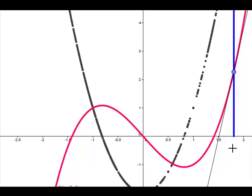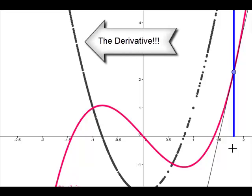This is what we mean when we say the derivative is a function. It's a function whose outputs are the slopes of the original function.